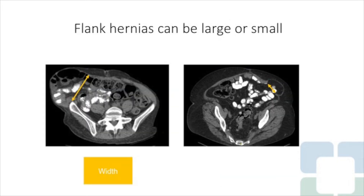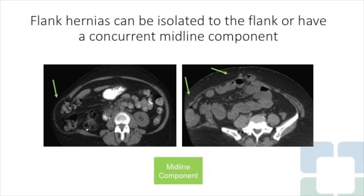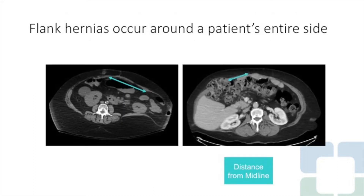We hypothesized that there is a size threshold at which open repair becomes preferable to minimally invasive options. We also hypothesized that isolated flank hernias and those with a concurrent midline defect require distinct approaches to maximize surgical exposure and potential for adequate mesh overlap. And lastly, we hypothesized that the most challenging part of the case changes depending on how far the defect is from the midline.